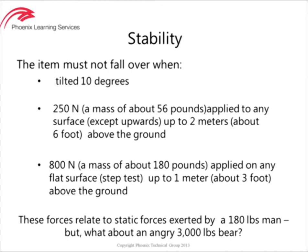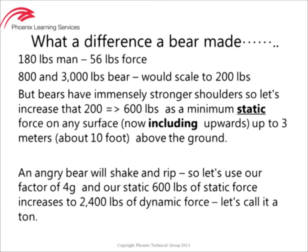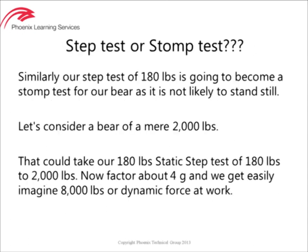These forces relate to static forces exerted by a 180-pound man. So what could the equivalence be when we scale this up to an angry 3,000-pound bear? Just for kicks, let's take our 4G impulse multiplier and apply it to a 2,000-pound bear. We could now imagine 8,000 pounds of dynamic force at work, with a bear stomping onto something or someone. Fortunately that doesn't happen, but let's look at what does.